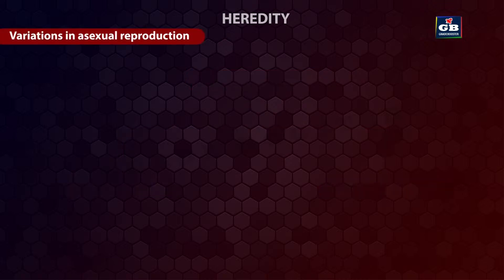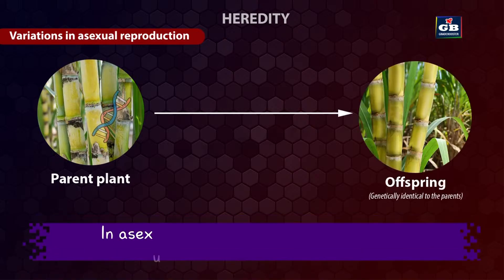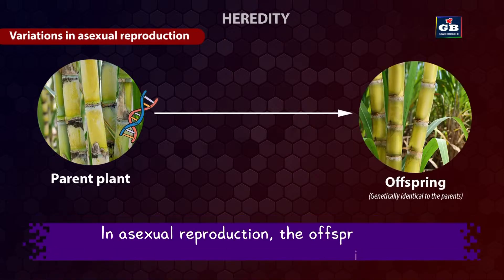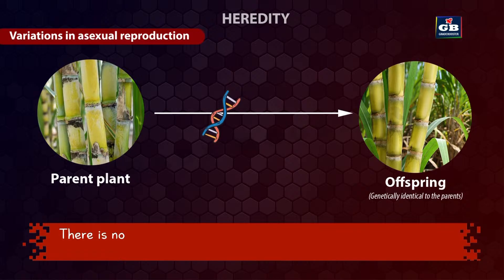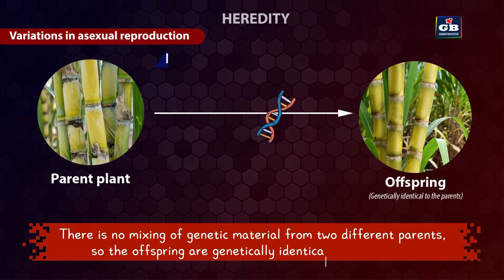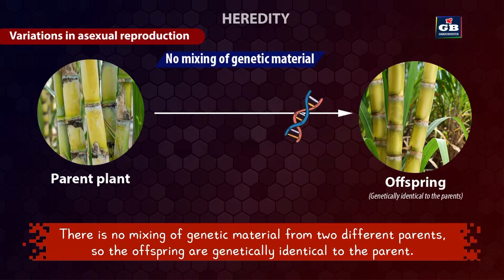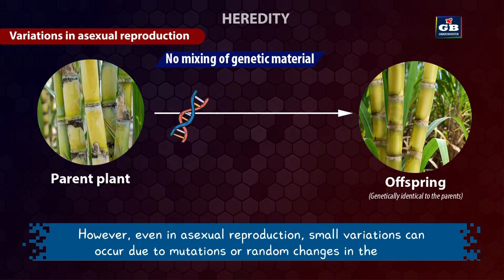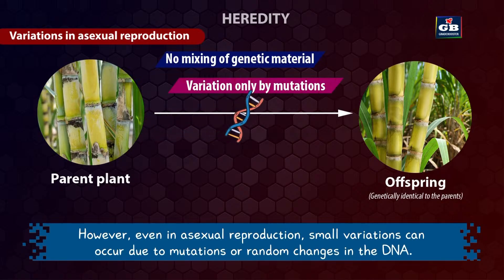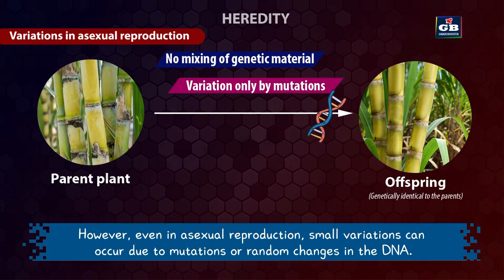Variations in asexual reproduction. In asexual reproduction, the offsprings are produced by a single parent. There is no mixing of genetic material from two different parents. So the offsprings are genetically identical to the parent. However, even in asexual reproduction, a small amount of variations can occur due to mutations, meaning random changes in the DNA.